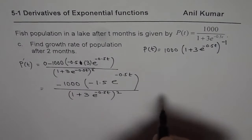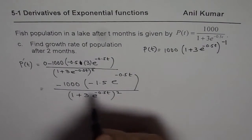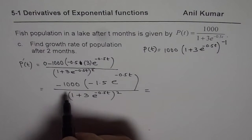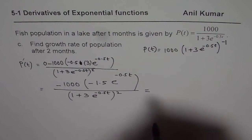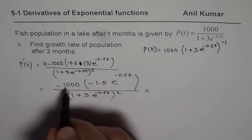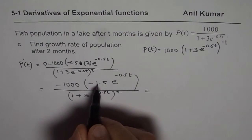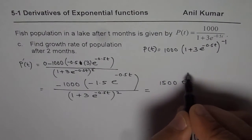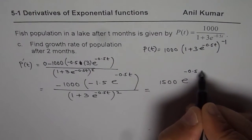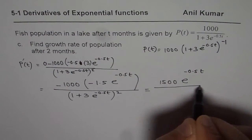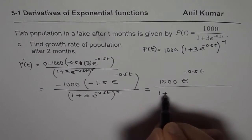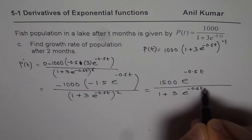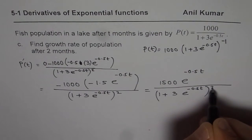Now, this minus times minus is indeed positive, so we do have a positive growth rate. Multiplying through, 1000 times 1.5 gives 1500, so the derivative is 1500 e to the power of minus 0.5t divided by 1 plus 3 times e to the power of minus 0.5t, whole squared. That is our derivative.